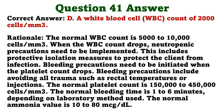The nurse is planning the client assignments for the day. Which is the most appropriate assignment for the unlicensed assistive personnel? A. A client who requires wound irrigation. B. A client who requires frequent ambulation. C. A client who is receiving continuous tube feedings. D. A client who requires frequent vital signs after a cardiac catheterization. The correct answer is B: a client who requires frequent ambulation. The most appropriate assignment for the UAP would be to care for the client who requires frequent ambulation, as the UAP is skilled in this task. The client who had a cardiac catheterization will require specific monitoring in addition to vital signs. Wound irrigations and tube feedings are not performed by unlicensed personnel.